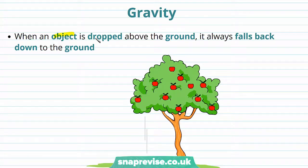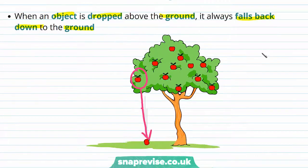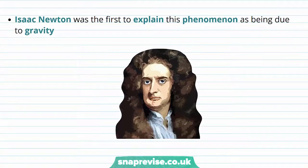When an object is dropped above the ground, it always falls back down to the ground. For example, if an apple drops down from a tree, it will fall straight down to the ground. A famous physicist known as Isaac Newton was the first to explain this phenomenon as being due to something called gravity.